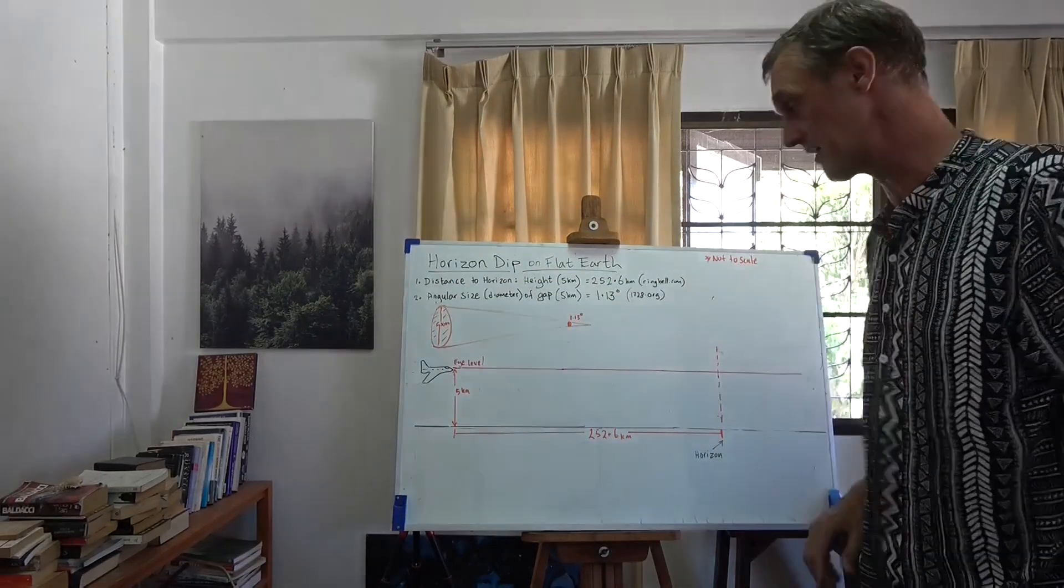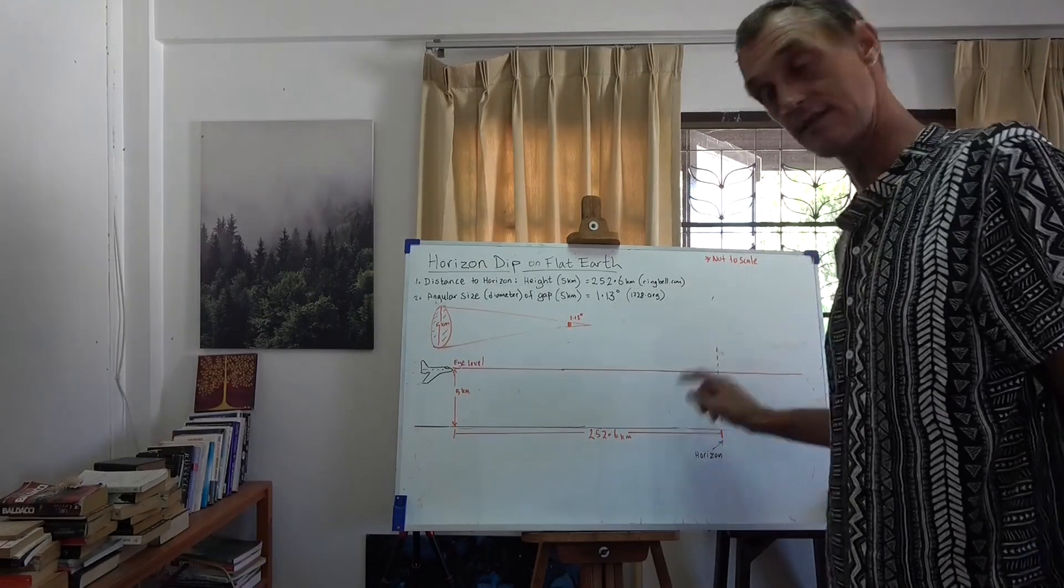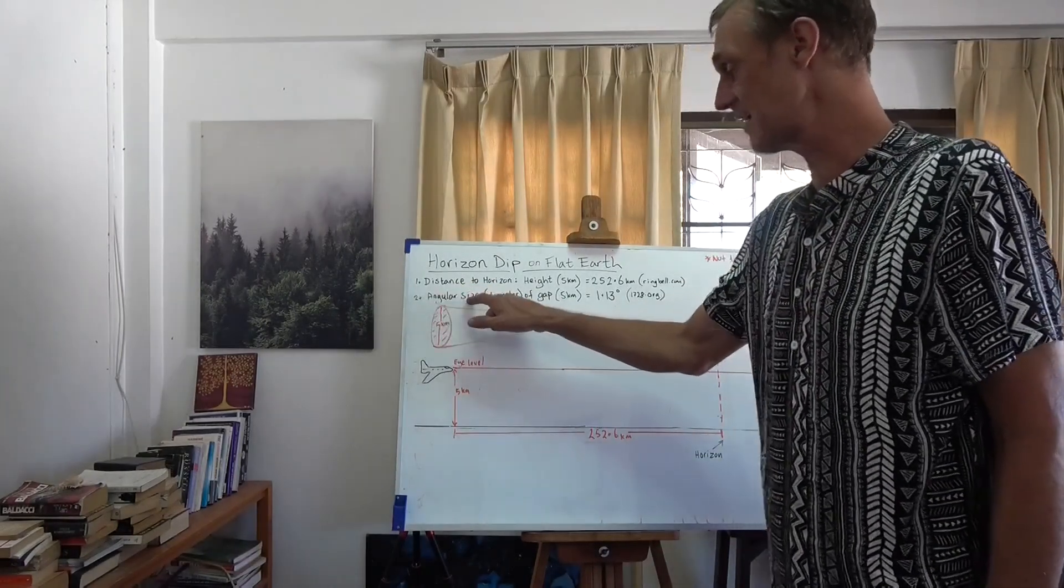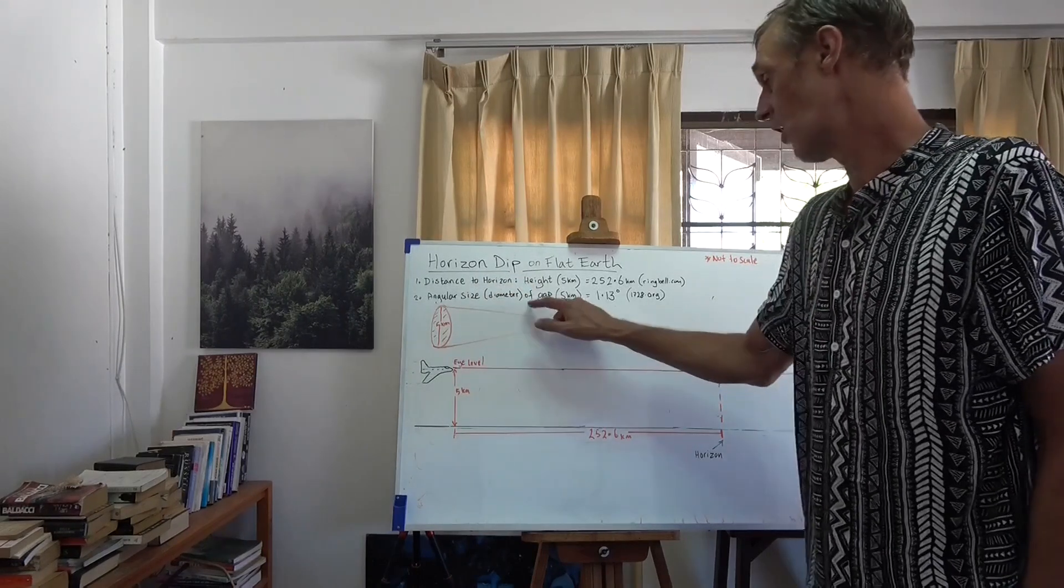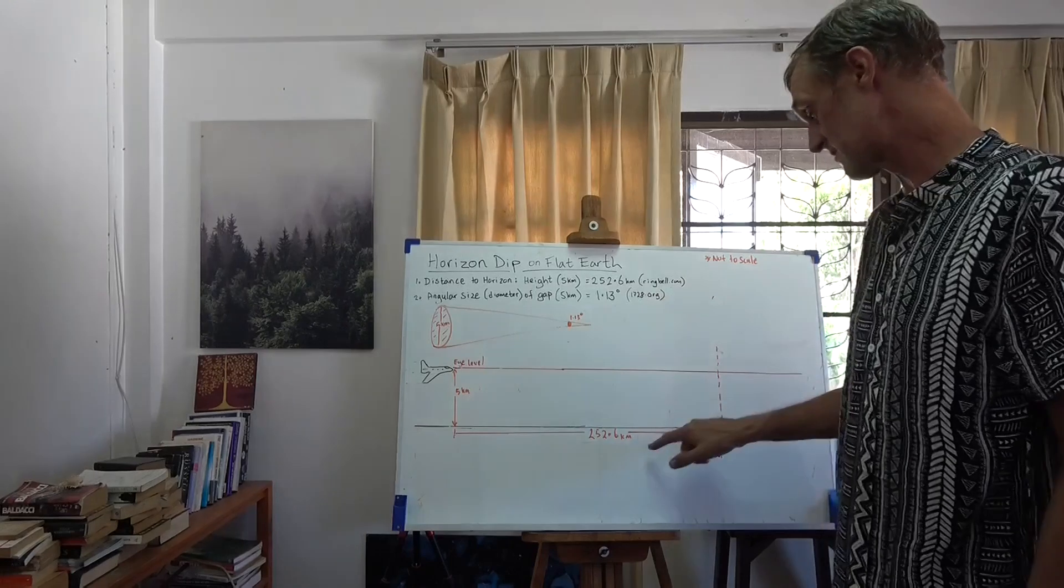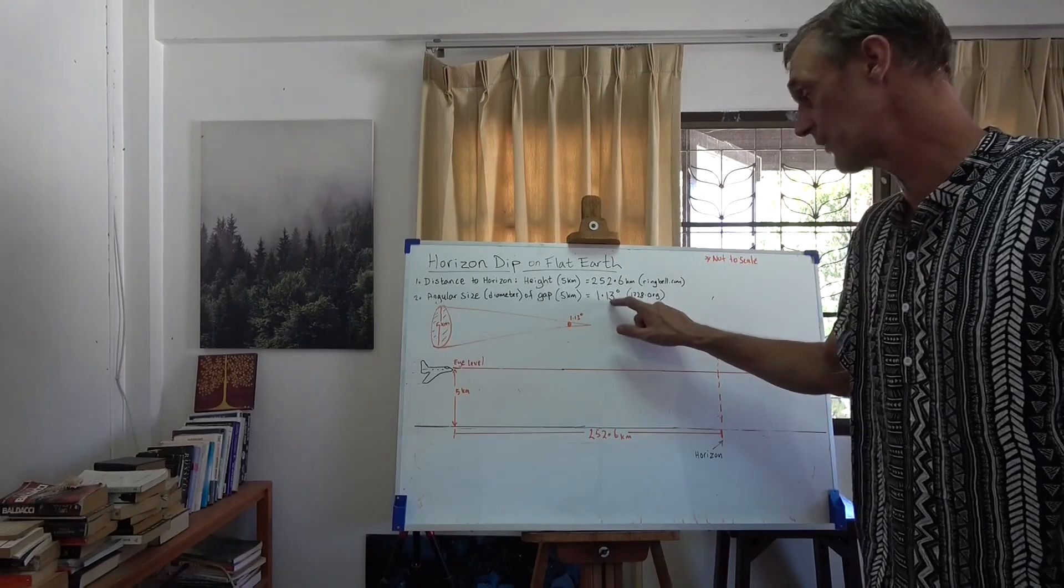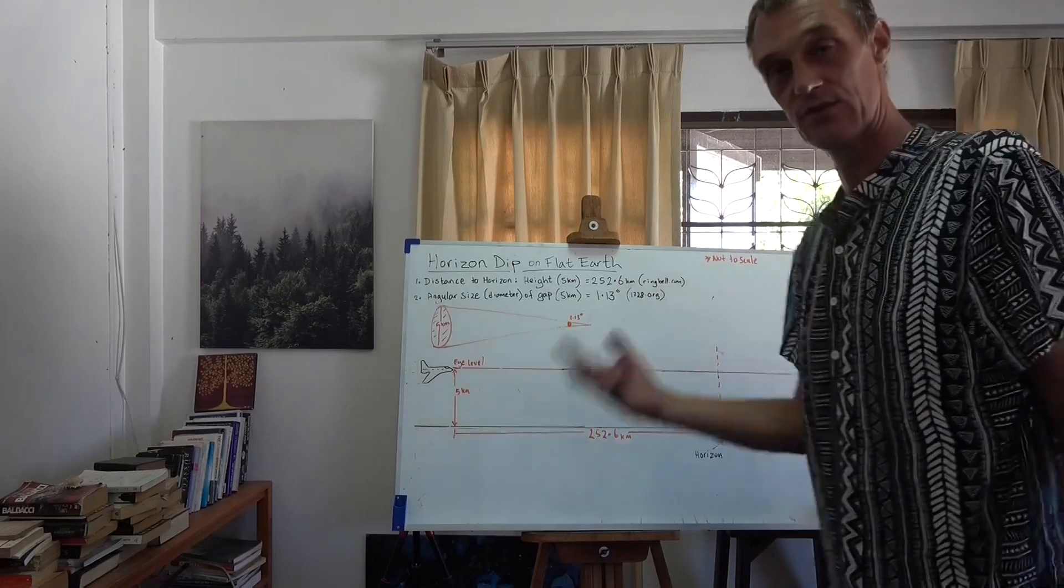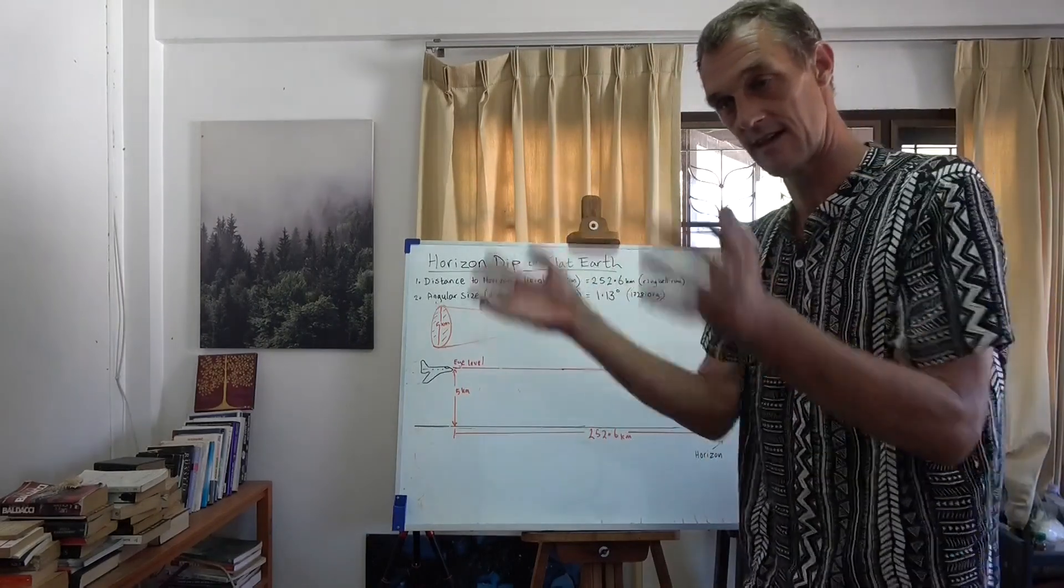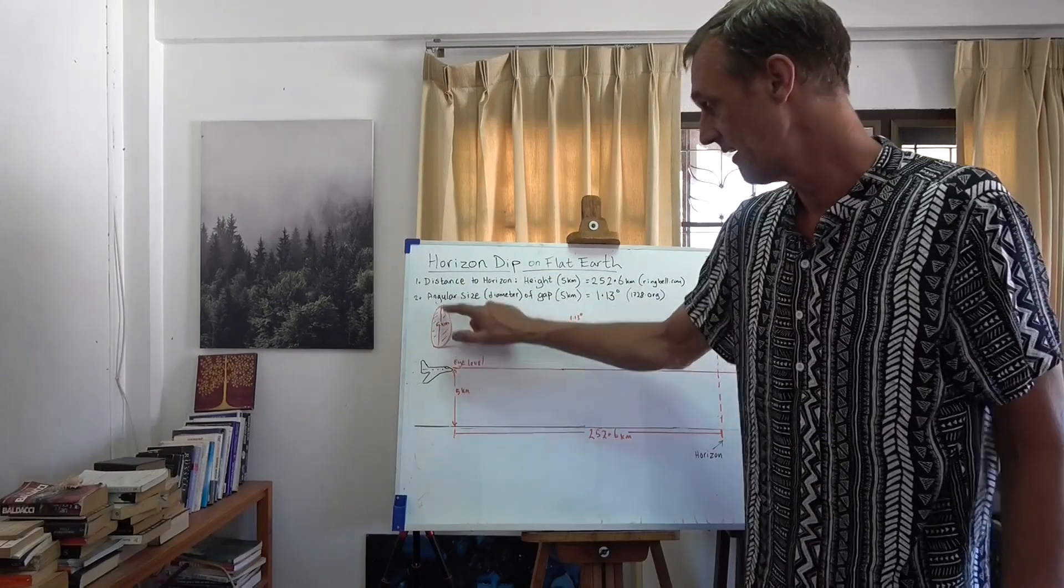We have a distance between the aircraft and the horizon point which is here of 252.6 kilometers. That's the calculation that we've got for the distance to the horizon. We are going to assume based on this official mathematics that that is as far as this pilot can see to the horizon at a height of five kilometers according to the official maths. Then we're going to look at the angular size, which is often referred to as the angular diameter of the gap which is five kilometers between the surface and the pilot's eye level at this distance of 252.6 kilometers.